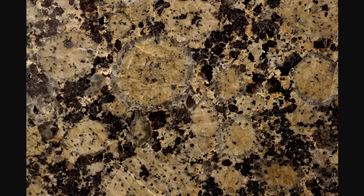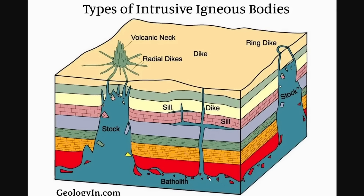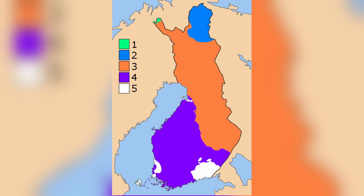This magmatism saw the creation of Rapakivi granite batholiths. Rapakivi granite is characterized by its very large crystals due to it cooling very slowly. A batholith is another type of igneous intrusion, commonly associated with being at the lower crust, and it is the largest size classification, requiring more than 100 kilometers across. In the case of southern Finland, this batholith formed very close to the surface — as close as three kilometers — creating very large regions of batholith.